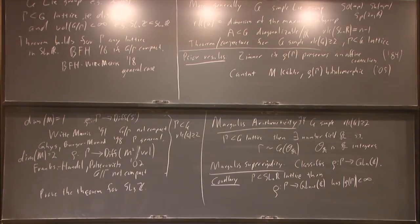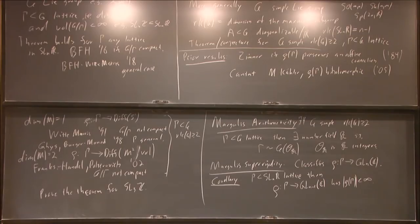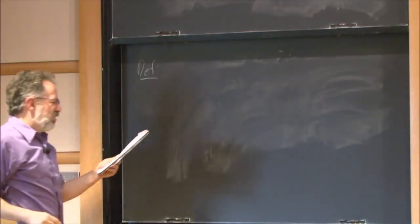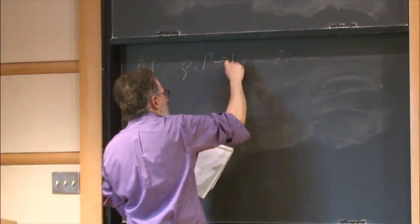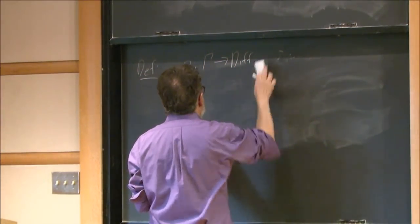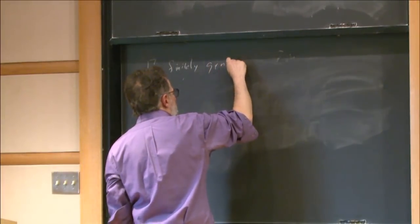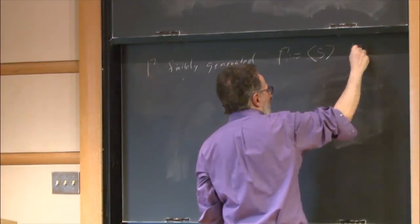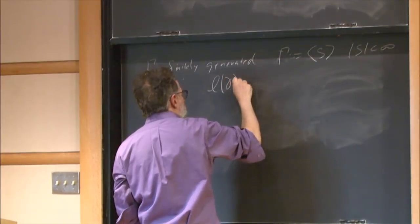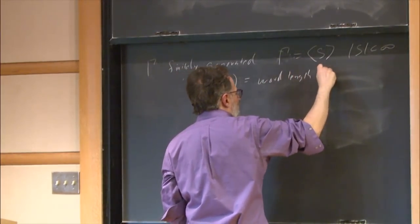I want to give you a slightly modified standard definition in dynamical systems. All of these gammas are finitely generated, so elements of Gamma can be written in words in some finite generating set S. This gives me a word-length function on Gamma. The next definition: if I have rho from Gamma to diff(M), and this definition makes sense for any finitely generated group, I'll say this has zero first Lyapunov exponent for a measure mu.